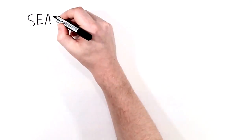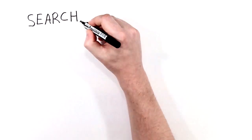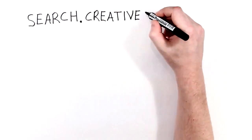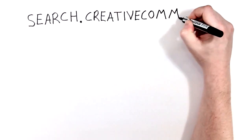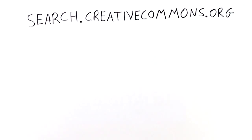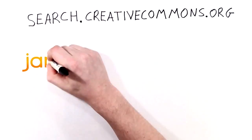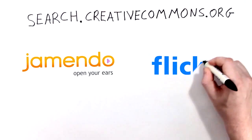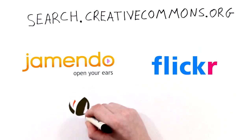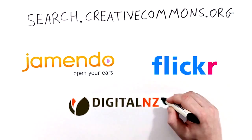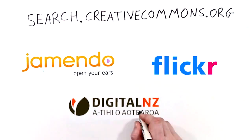There are some good ways to find other people's Creative Commons licensed work online. You can use a search filter by going to the Creative Commons website. Why not try the Jamendo website for music, Flickr for images, or Digital NZ for New Zealand content.